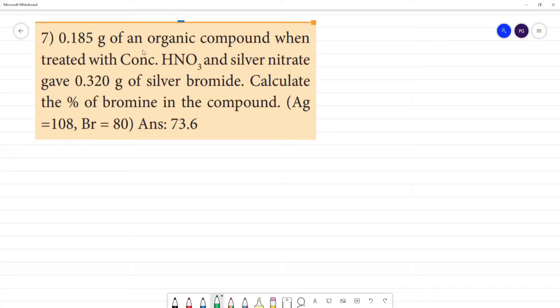0.185 gram of organic compound when treated with concentrated HNO3 and silver nitrate gave 0.32 gram of silver bromide. Calculate the percentage of bromine. What can we do to extract?